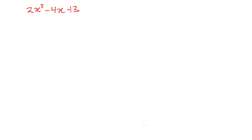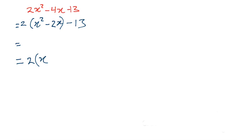First thing: factor out the 2, giving us 2(x² - 2x) - 13. Let's skip the intermediate line and go straight to this: 2y... half of negative 2 is negative 1, so we'll be squaring that. Let's not put the minus 13 yet because that number may change depending on what we have to do. So we are adding in negative 1 squared.